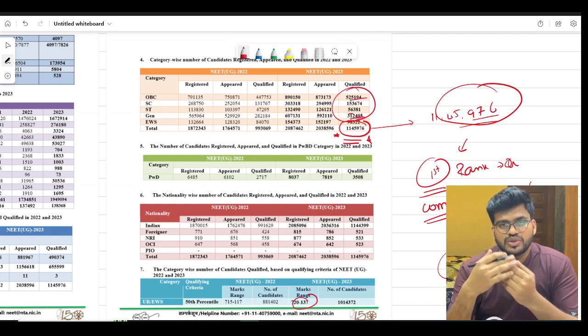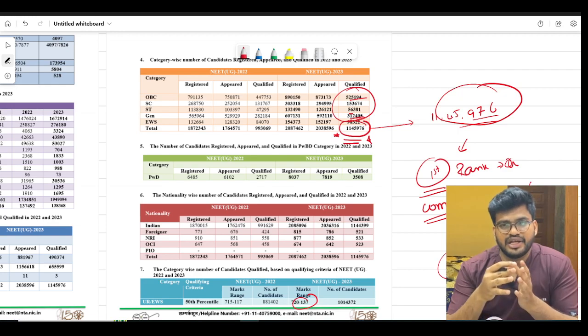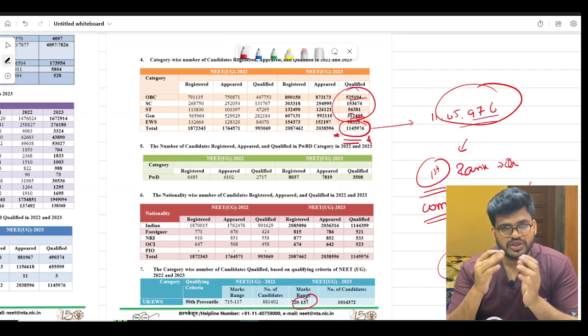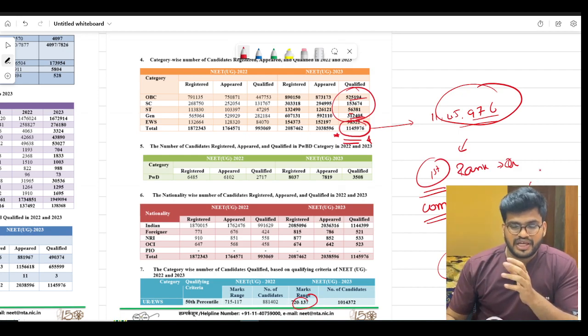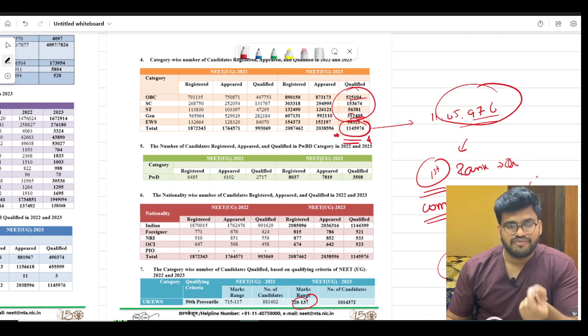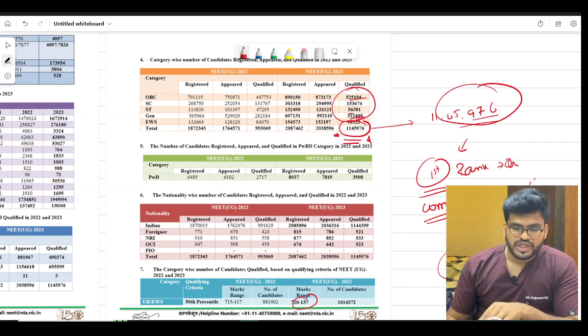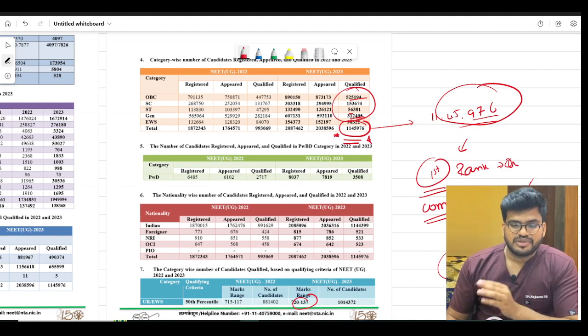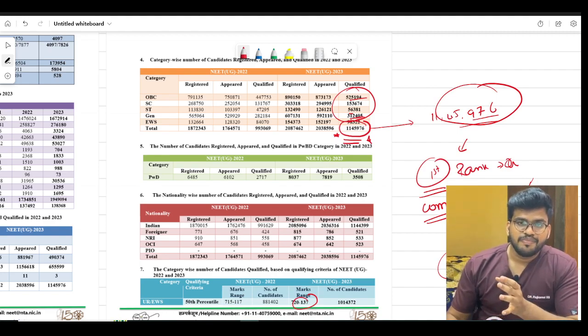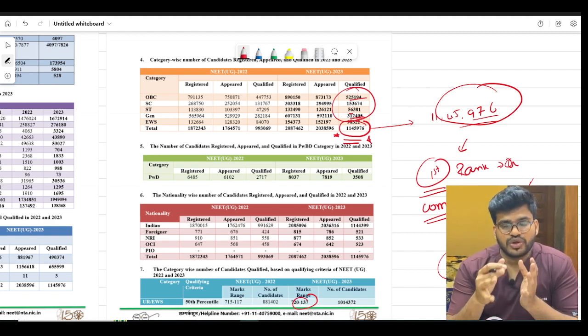Two percent scored 720 out of 720, and many people scored above 650 and 680. There are many such students, and according to me the cutoff will definitely increase. Past year marks also increased from last year, so cutoff will also increase.